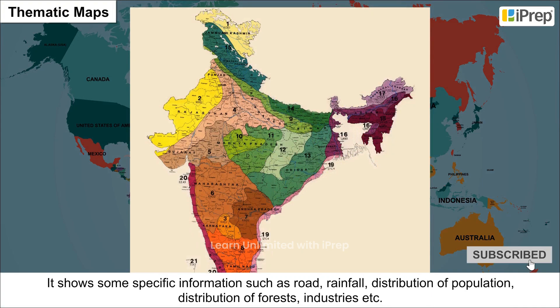Thematic Maps show some specific information such as roads, rainfall, distribution of population, distribution of forests, industries, etc.